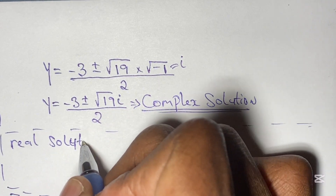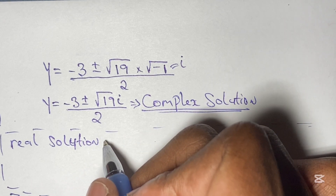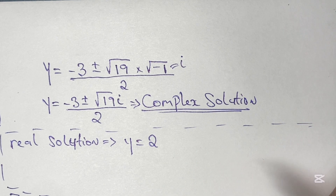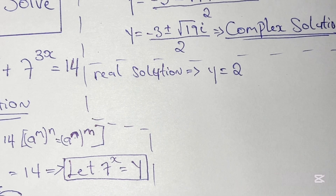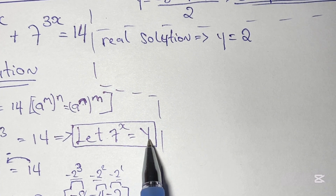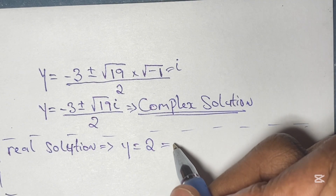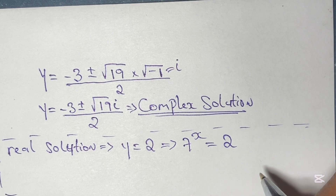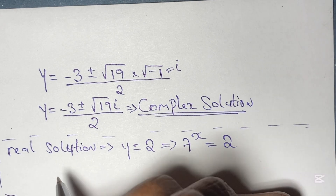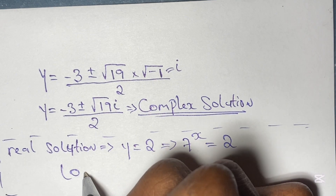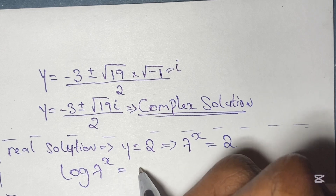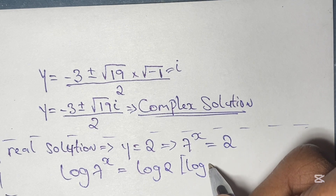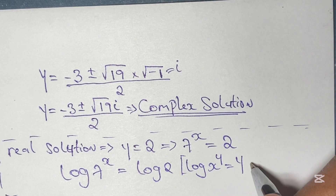Using our real solution y equals 2, and recalling that we let 7 to the power of x equal y, it therefore follows that 7 to the power of x equals 2. To solve for x we apply logarithms: log of 7 to the power of x equals log 2. Using the logarithm rule that log x to the power of y equals y times log x, we simplify.